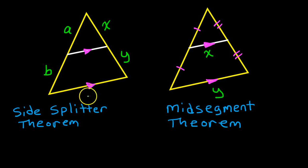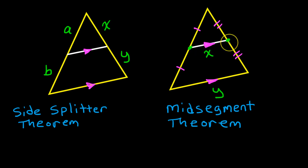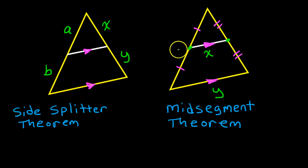For the side-splitter theorem, that's all we have: a segment that is parallel to a side. Whereas for the mid-segment theorem, we have the additional information that we have midpoints. If the segment joins midpoints, then we can use the mid-segment theorem. We will know we have midpoints because the segments on either side will be congruent.